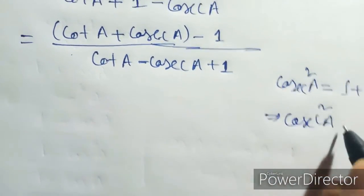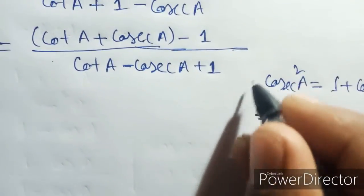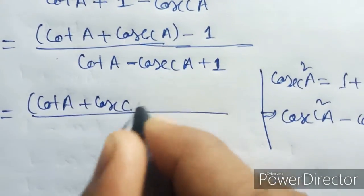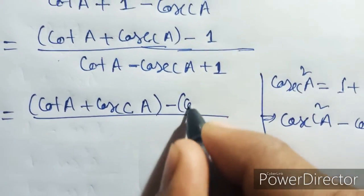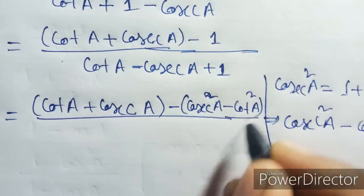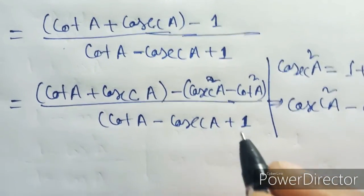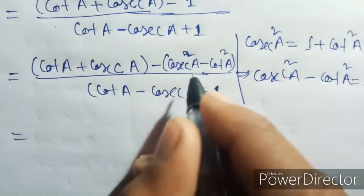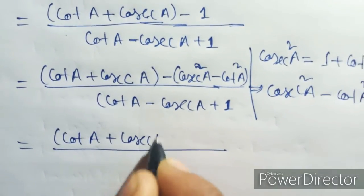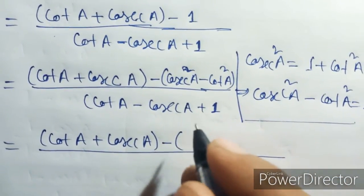cos x square a minus cos square a equal one. From cos x square a minus cos square a, minus cos square a by cos a, minus cos a plus one — it will make a square minus b square.